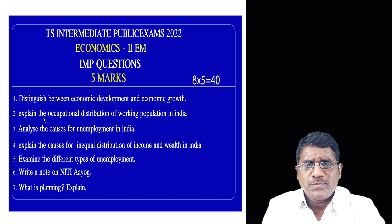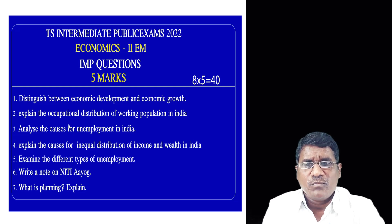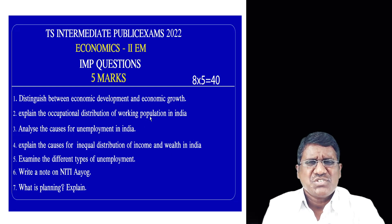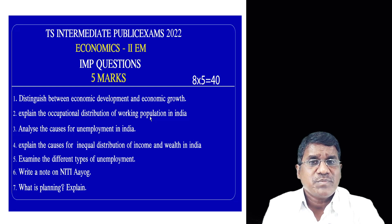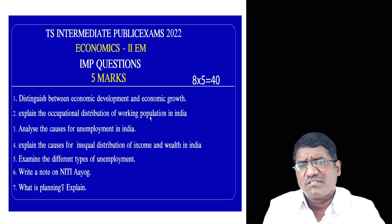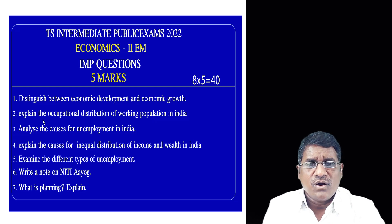Next, explain the occupational distribution of the working population in India. This covers the distribution of labour and population across agriculture, industrial, and service sectors, and what percentage of people depends on each sector.